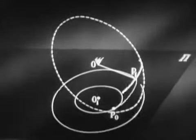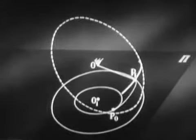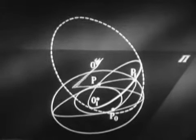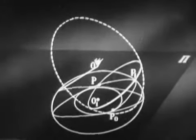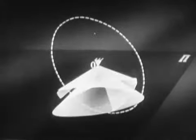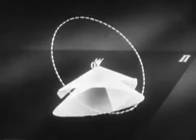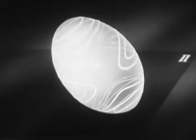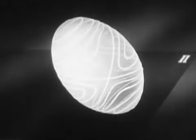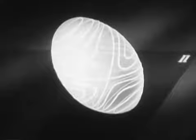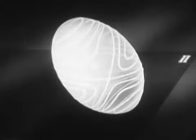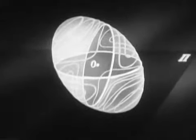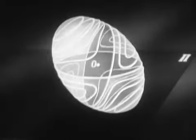Подвижным и неподвижным аксоидами в этом случае будут конические поверхности более сложного вида. На эллипсоиде видны направляющие подвижных аксоидов, называемые полодиями, соответствующие различным высотам H. Эти полодии могут быть двух видов. Разделены они особой полодией, образованной двумя эллипсами.